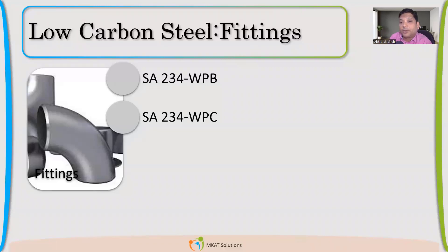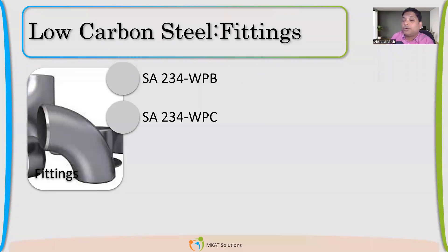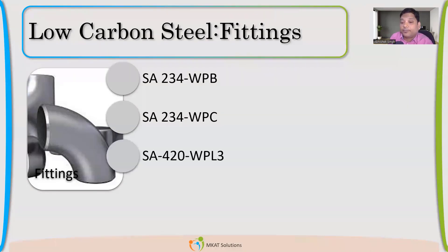For fittings like elbows, SA234 Grade WPB is used. WP stands for weldable and pressure-taking; B is the grade — similar to SA106 which also has grades A, B, and C. SA234 also comes in WPA, WPB, and WPC. SA420 is another fitting material, good for low temperature.